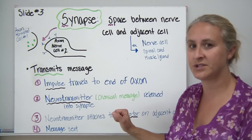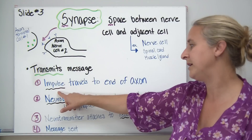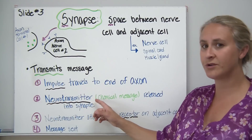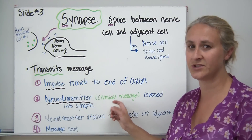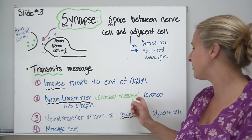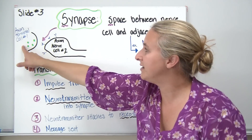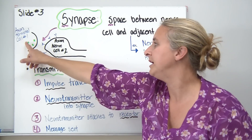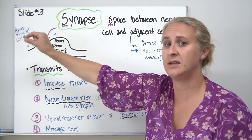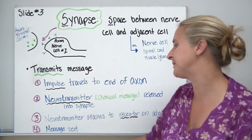The way cells transmit messages through neurons is that an impulse travels to the end of the axon, where something called a neurotransmitter — a chemical signal, similar to hormones — gets released into the synapse. At the end of the axon terminal, tiny vesicles contain neurotransmitters inside them, and those neurotransmitters get released through the membrane into the synapse.